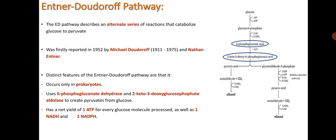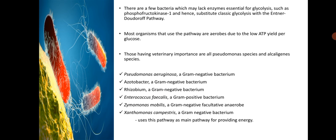The ED pathway has a net yield of 1 ATP for every glucose molecule processed, as well as 1 NADH and 1 NADPH. There are a few bacteria which may lack enzymes essential for glycolysis, such as phosphofructokinase-1, and hence substitute classic glycolysis with the Entner-Doudoroff pathway. Most organisms that use the pathway are aerobes due to the low ATP yield per glucose. Those having veterinary importance are all Pseudomonas species and Alcaligenes species.